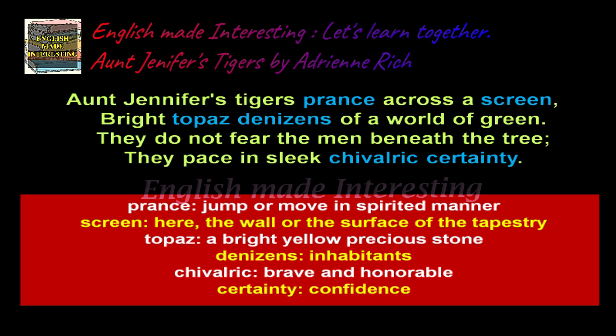Aunt Jennifer's tigers prance and move across a screen or panel. The poet describes them as bright coloured, like the shining golden yellow jewel topaz. They are free inhabitants of the green forests and are not scared of the men standing under the tree. These tigers move about with grace, elegance and confidence. Aunt Jennifer's tigers are not real or living tigers.